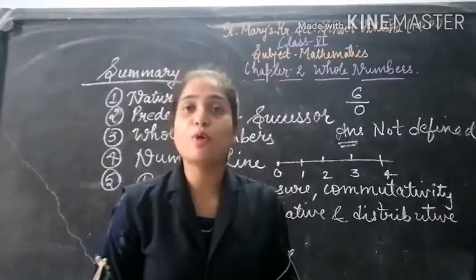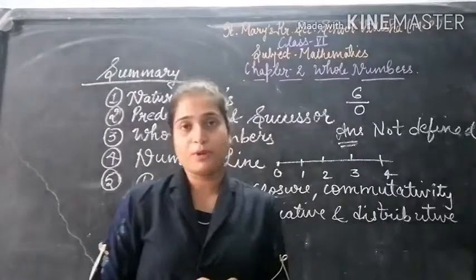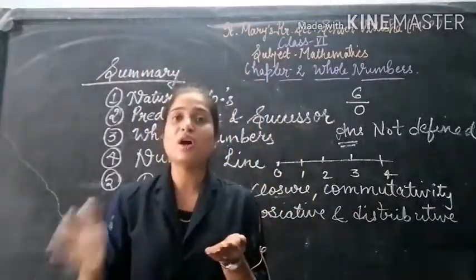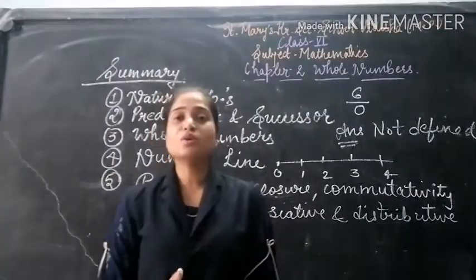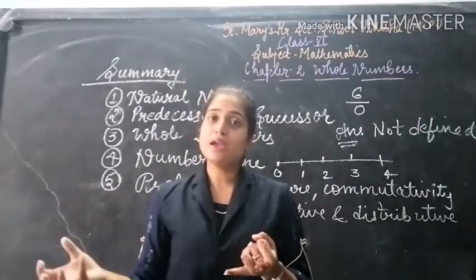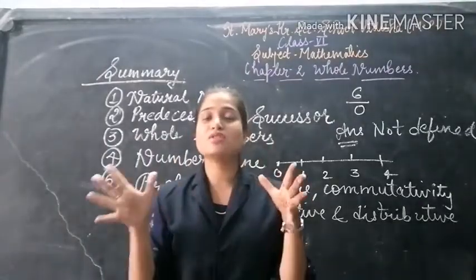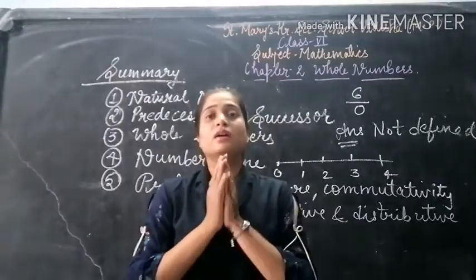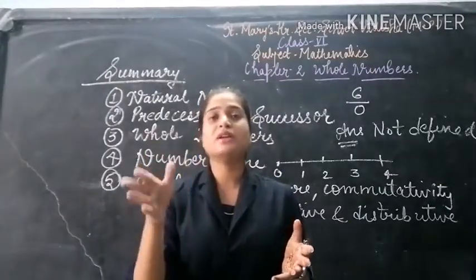After closure property, we have commutativity property. This means that when we add two numbers in any order, we get the same answer. Suppose we add 2 and 3: 2 plus 3 is 5, and 3 plus 2 is also 5. The arrangement of numbers does not matter in whole numbers. Two numbers can be arranged in any way and we will get the same answer.